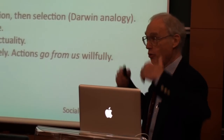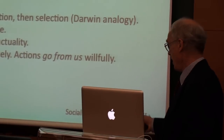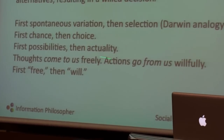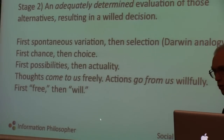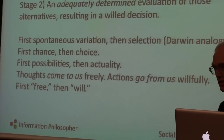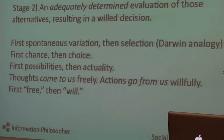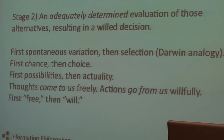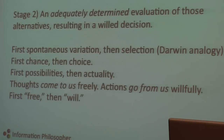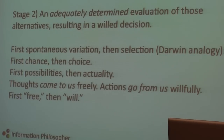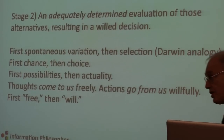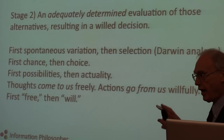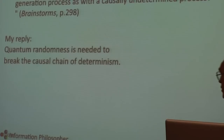I like this two-sentence version: thoughts come to us freely — they pop into our heads. Mozart's music flew into his mind, and he wrote it down. Actions, however, go from us willfully. I want to separate the free from the will, something John Locke first did in the 1680s, because he said surely it's not the will that is free or random — it's the person, the man, that's free. To understand that, you must see free will is not a single concept, a moment of time. You must unpack it into a free stage and a will stage.